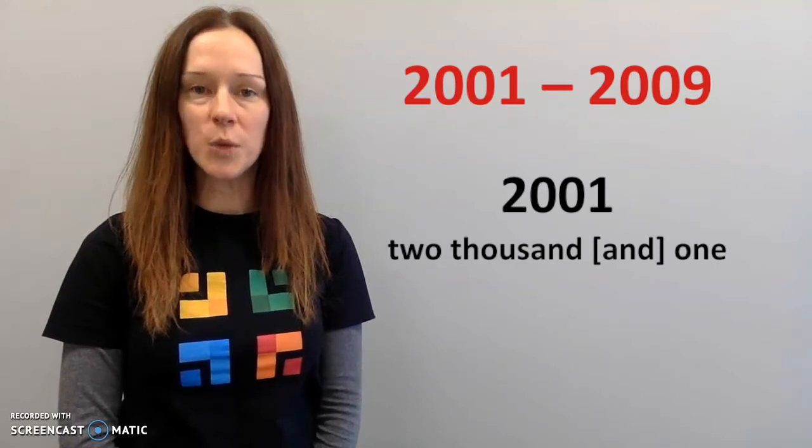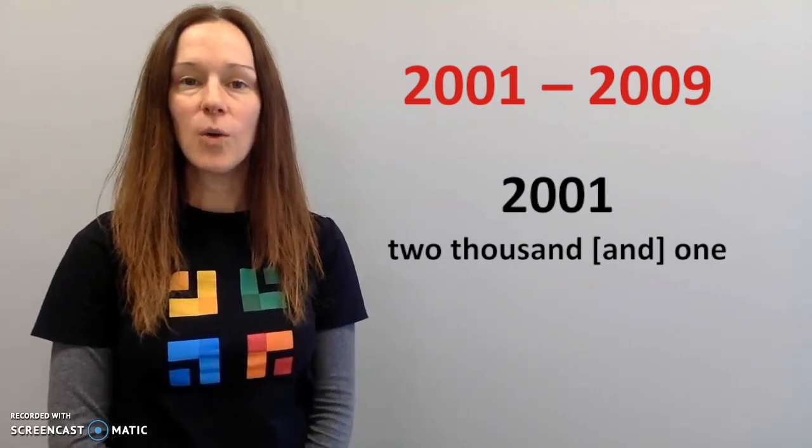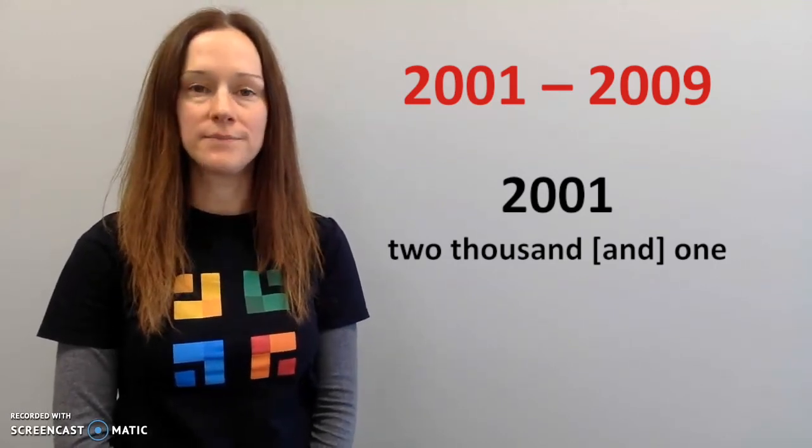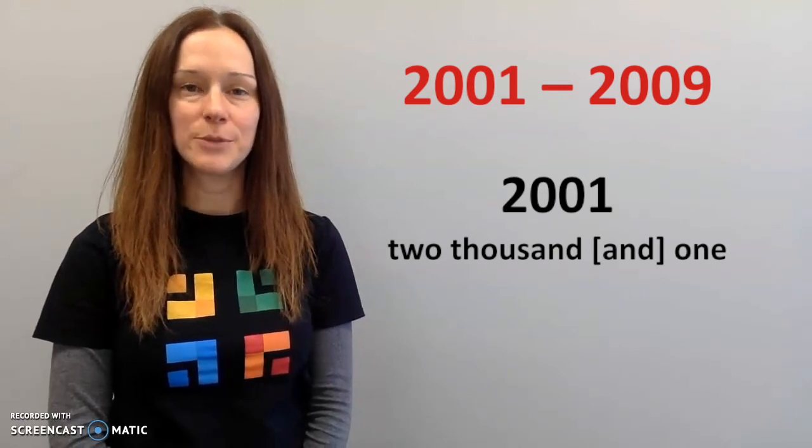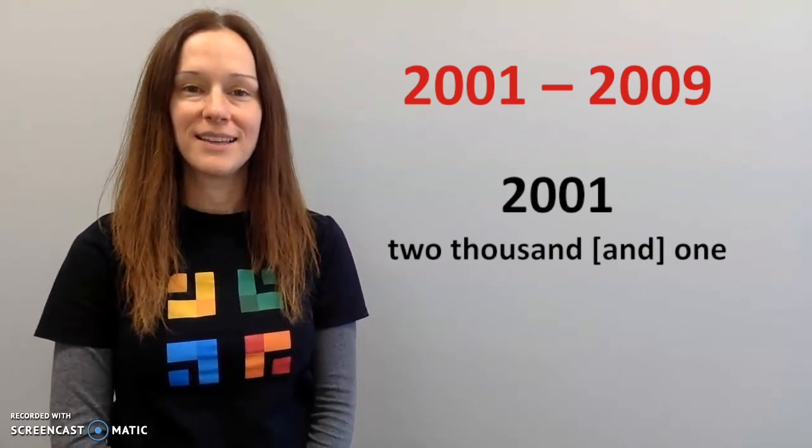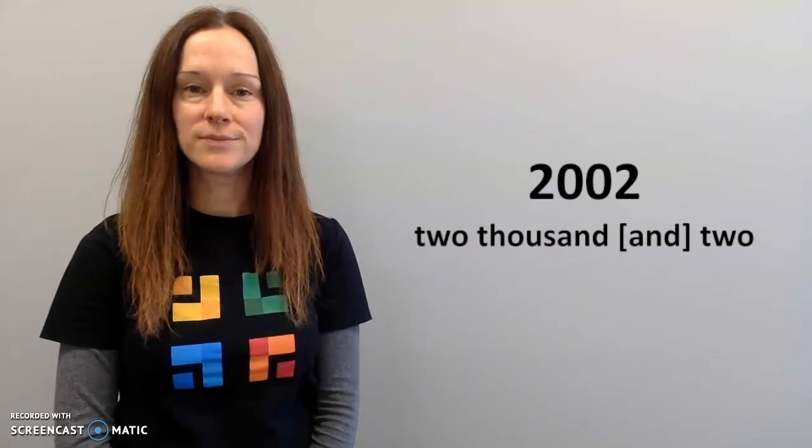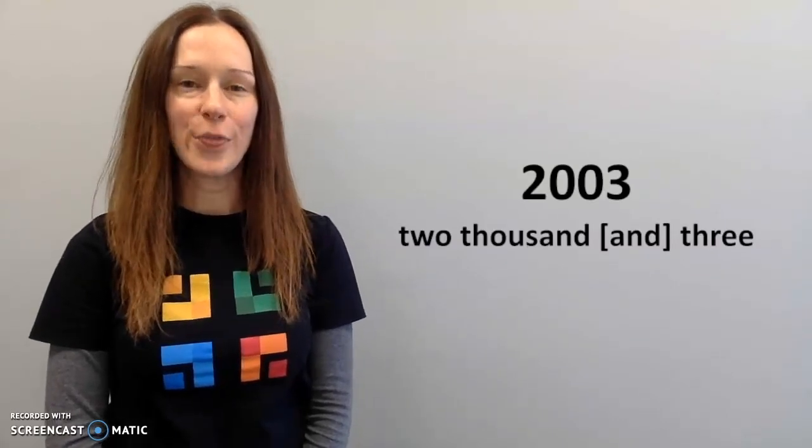For the years between two thousand and one and two thousand and nine, we can say two thousand and one or two thousand one. The 'and' is optional. So two thousand two, two thousand and three.